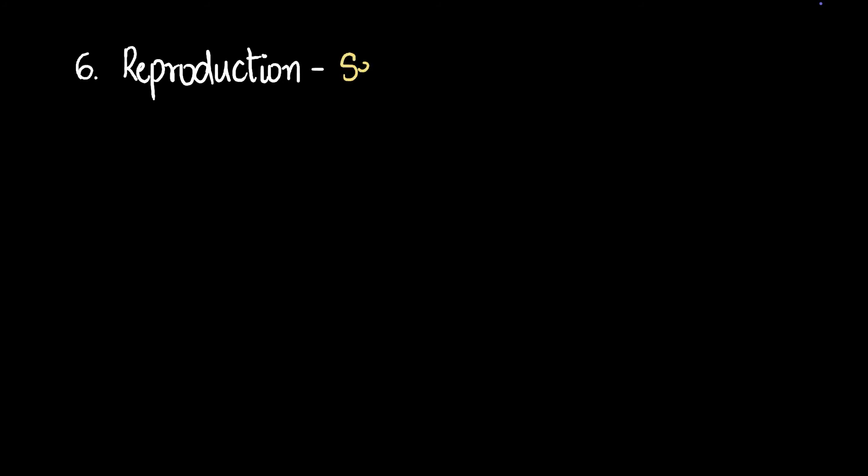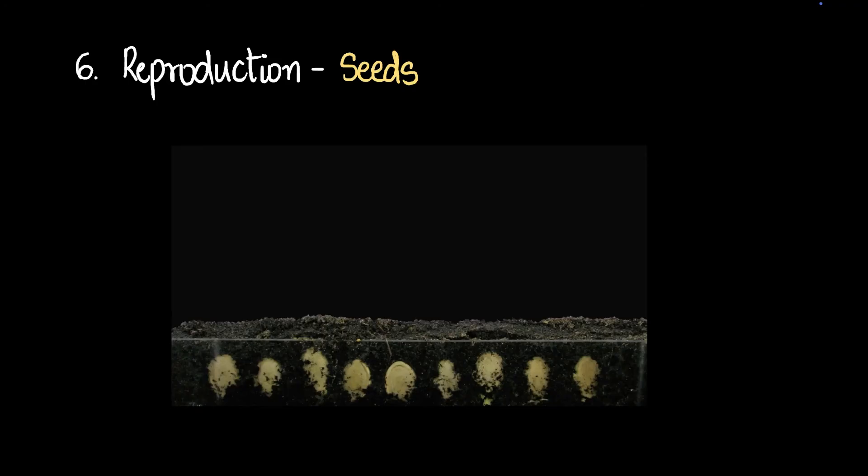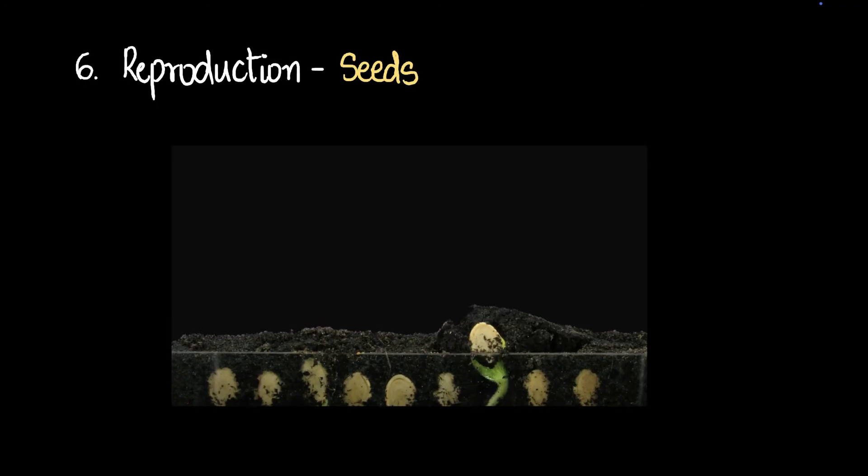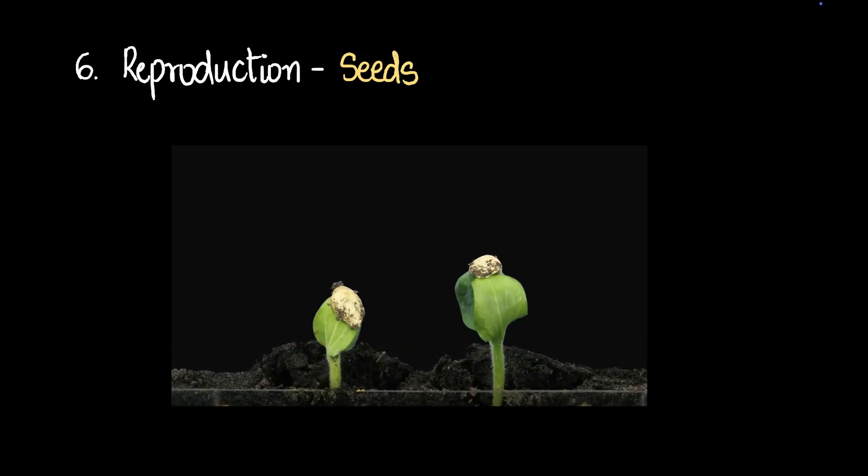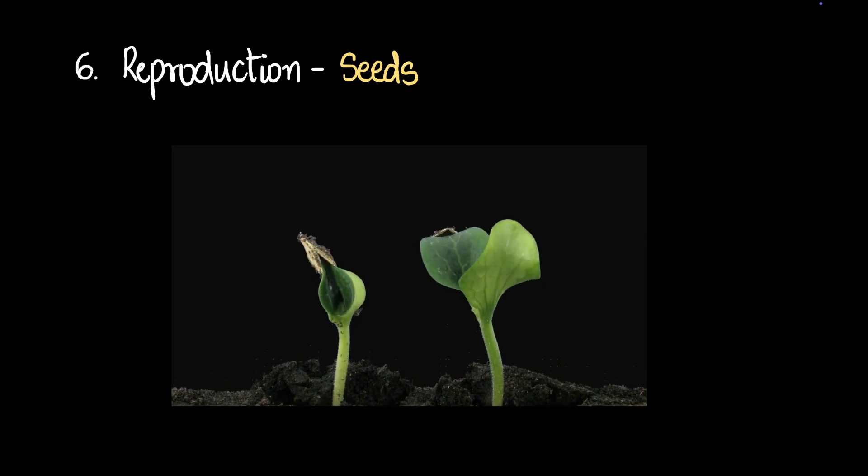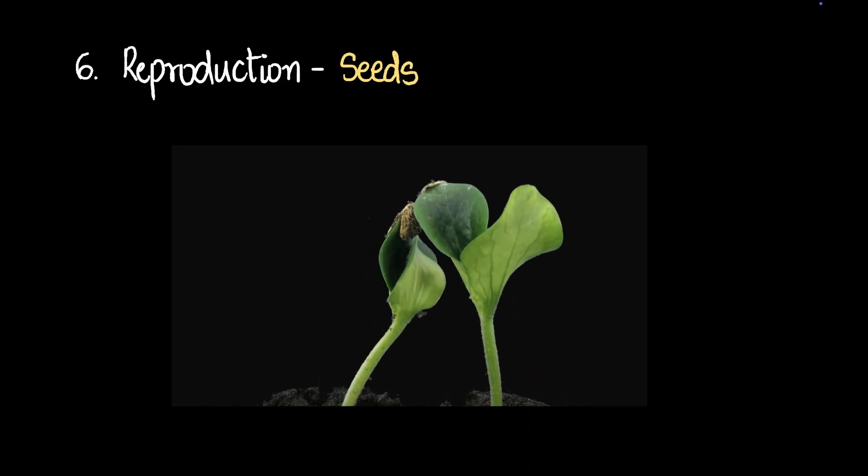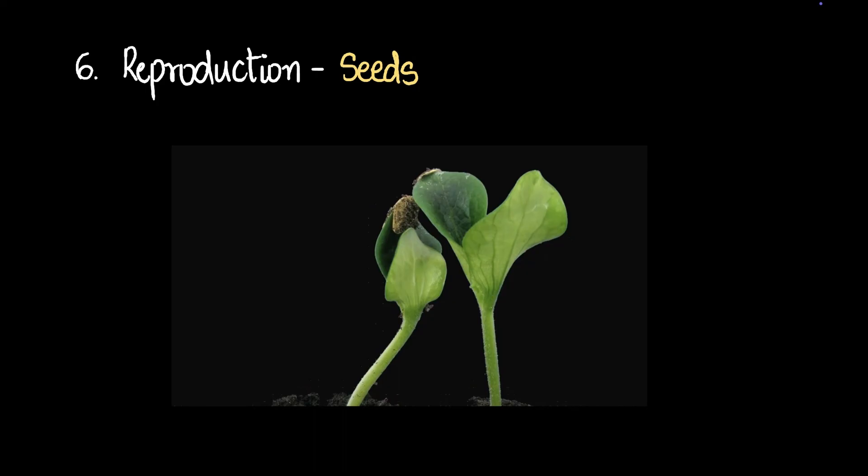What are some other ways of reproduction? How do plants reproduce? Plants reproduce often through seeds. Look at this time-lapse video, a really fast-forwarded video. Those are seeds slowly coming out of the ground and becoming plants. Amazing, isn't it?